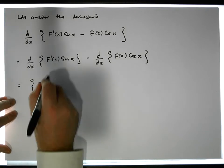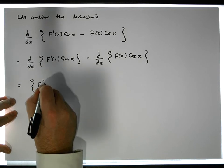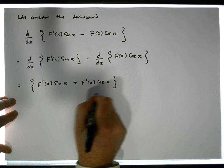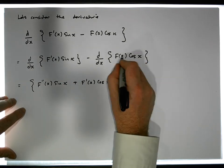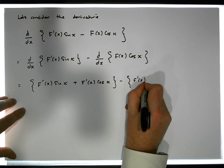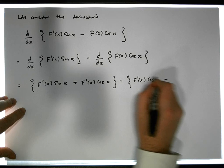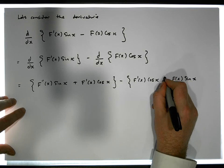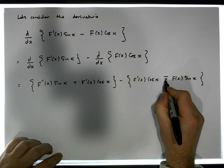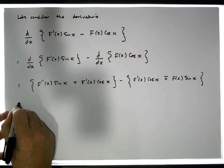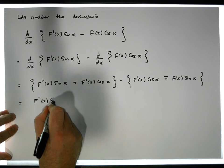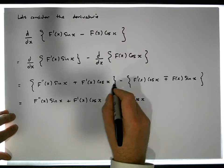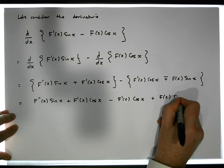Applying the product rule to uv: this becomes F double prime of x sine of x plus F prime of x cosine of x. Minus: differentiating the second product gives F prime of x cosine of x plus F of x times the derivative of cosine x, which is minus sine x — so that becomes a negative, giving us plus F of x sine of x.